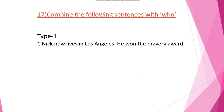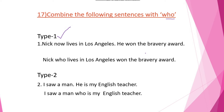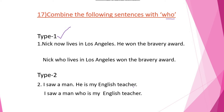Combine the following sentences with who, which, or that. In the public examination, this type of question appears. For example: 'Nick who lives in Los Angeles won the bravery award.' Here is Type 2: 'I saw a man. He is my English teacher.' The answer is: 'I saw a man who is my English teacher.'